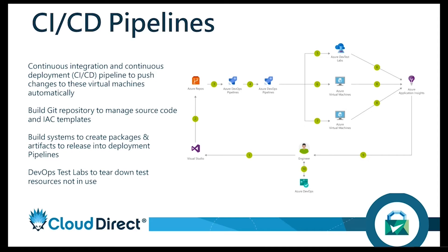Walking through the data flow — you can see the developer at the bottom working on a component of development. They're ready to change application source code. Stage one, they're working in Visual Studio until they're in a position to move to stage two: committing the application code. Once they're happy, they commit to the repository using Azure Git repositories.